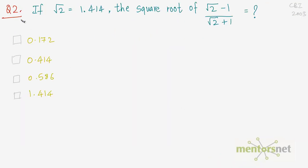Moving on to question number 2, which was asked in the CBI exam of 2003. You are given the value of √2 and have to find the square root of the expression (√2 - 1)/(√2 + 1). We multiply the numerator and denominator by (√2 - 1) to get rid of the denominator.